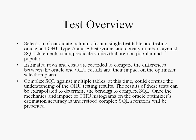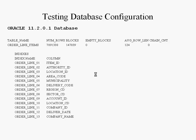These histograms work with VARCHAR character, numeric, and date fields. They can also be applied to improve access against IOTs, partition tables, partition views, and parallel joins and partition-wise joins. Complex SQL against multiple tables at this time could confuse the understanding of the OHU testing results, but those results can be extrapolated to determine the benefits to complex SQL. Once the mechanics and impact of OHU histograms and Oracle Optimizer estimation are understood, complex SQL scenarios will be presented.